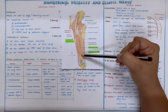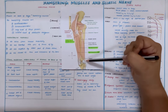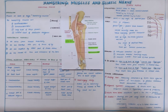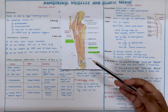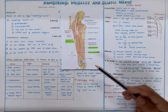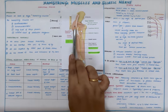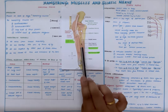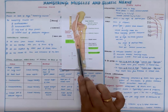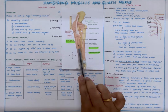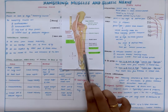As it reaches the popliteal fossa at the superior angle, it divides into the tibial and common peroneal components. Coming to the branches of the sciatic nerve, it gives articular branches to the hip joint and muscular branches to the hamstring muscles, as well as muscular branches to the short head of biceps femoris.